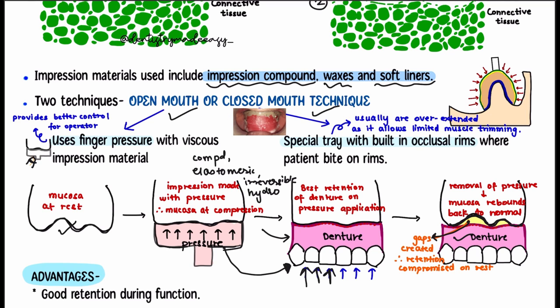In the closed mouth technique, the patient is asked to bite, so the mouth is closed. A special tray with occlusal rims built on it is required, and the patient bites on these rims — replicating mastication or chewing forces. Many dentists have advocated the closed mouth technique, but its major disadvantage is that it does not allow adequate muscle trimming of the periphery. Since the mouth is closed during chewing, muscle trimming is not possible, leading to over-extended margins.